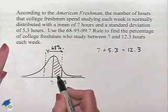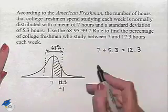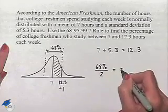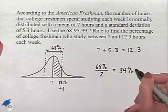Because we have symmetry in the graph and we're working with half of this, we take 68 percent and divide by 2 to give us 34 percent as our answer.